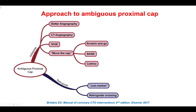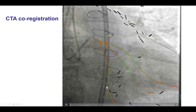This is how one can approach the ambiguous proximal cap. One option is to do better angiography to understand where the vessel is heading. The second is to do CT angiography, and in this particular case, given the previous failure, we had done a CT angiogram which we were able to co-register and guide our procedure. Another option is to use intravascular ultrasound, which was not useful in this case. The move-the-cap technique would not be useful here because of the origin of the LAD and the lack of a well-defined proximal cap. Retrograde was an option but as a last resort because of the small size and tortuosity.